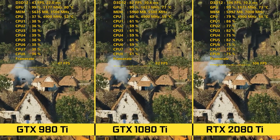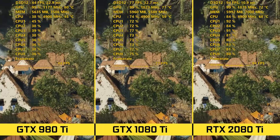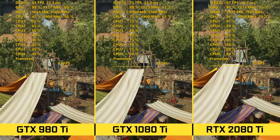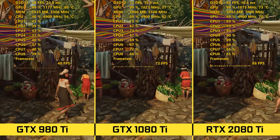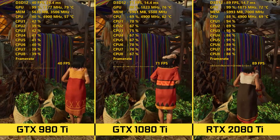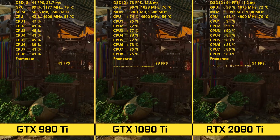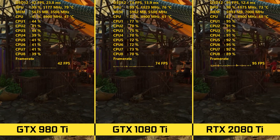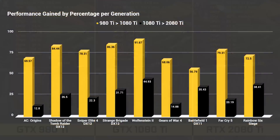This is probably going to be one of the most shocking graphs you've seen since the RTX cards launched. Starting with Assassin's Creed Origins on the left: going from the 1080Ti to the 2080Ti, it only gained 12.8%. All percentage gains were calculated at 1440p so we're in a purely GPU-bound scenario with no CPU interference. From the 980Ti to the 1080Ti in that same title, we saw a gain of 69.57% — a massive generational performance leap going from Maxwell to Pascal.